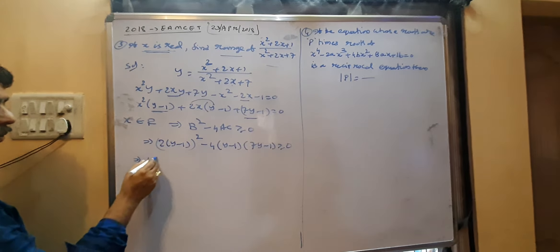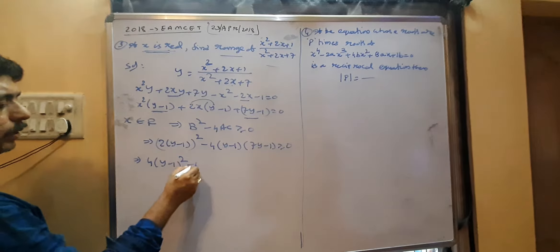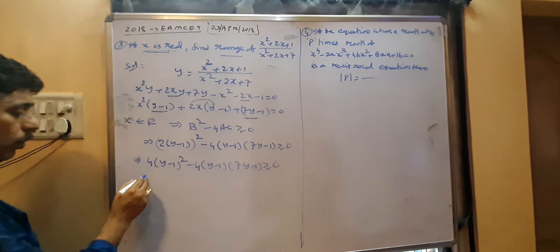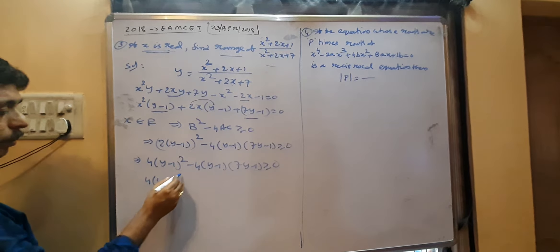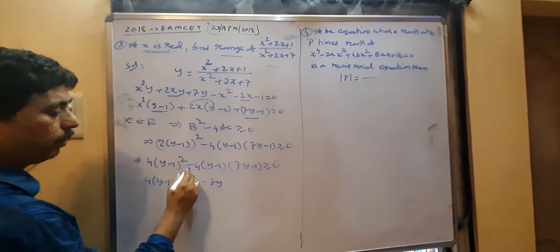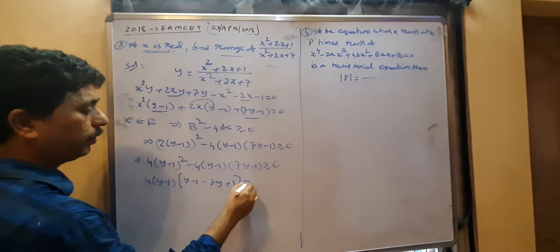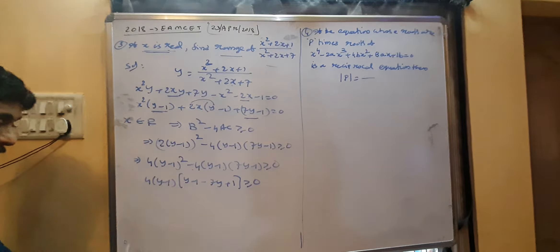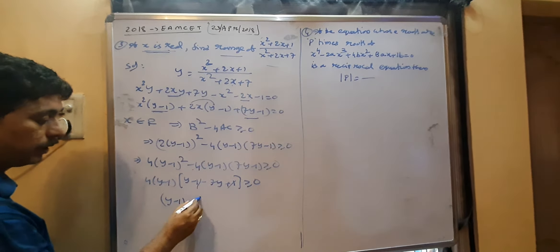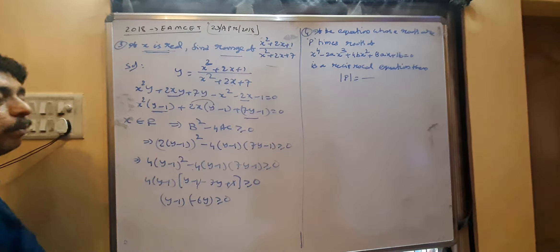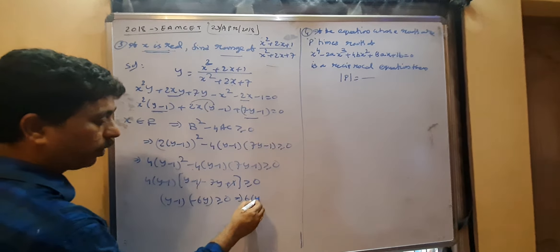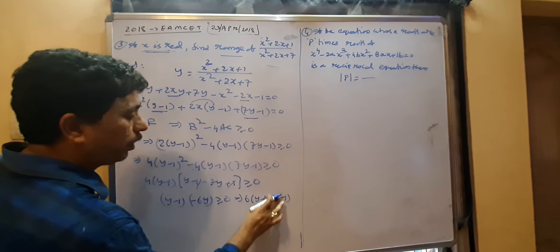Expanding: 4(y−1)² − 4(y−1)(7y−1) ≥ 0. Taking 4(y−1) as common: 4(y−1)[(y−1) − (7y−1)] ≥ 0. Inside the bracket: y − 1 − 7y + 1 = −6y. So we get 4(y−1)(−6y) ≥ 0.